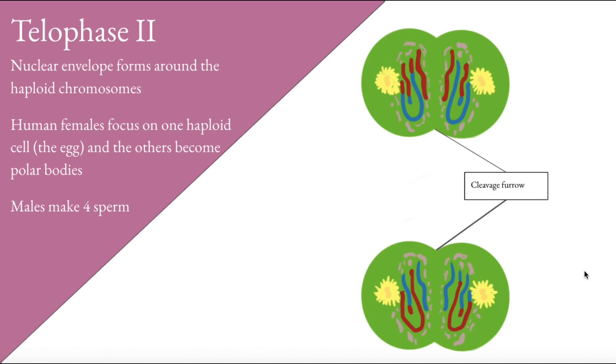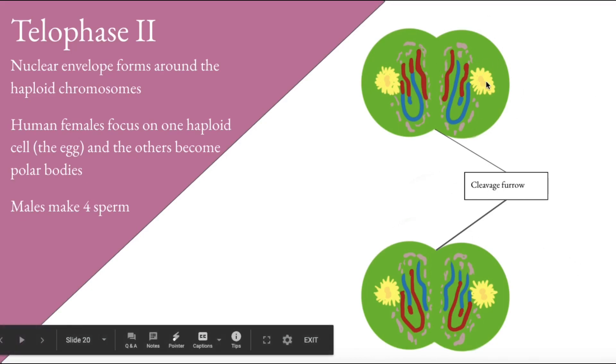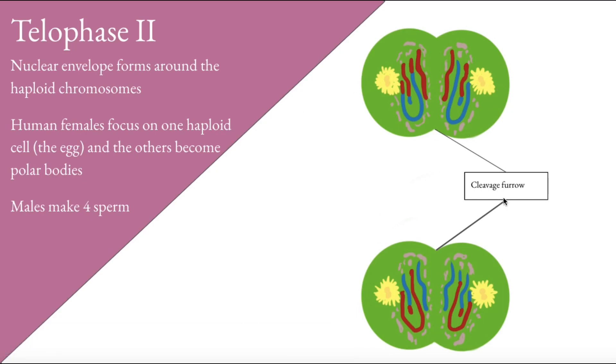Again, in humans, it is the female that has an egg. The other three cells are called polar bodies as the human female focuses all the efforts onto one of these cells called the egg. The males, however, have four separate distinct sperm from this meiosis division.